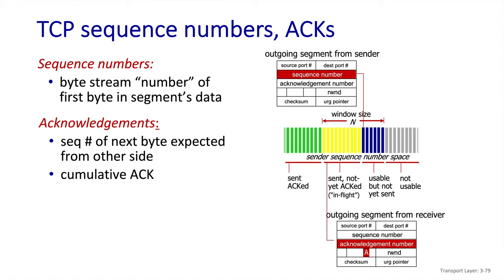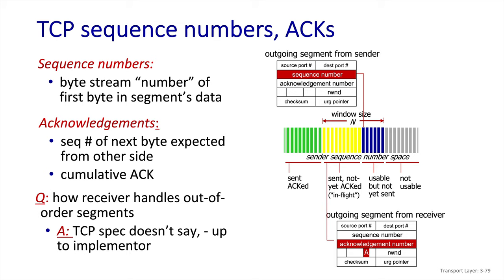This is a cumulative acknowledgement number, as we saw with go-back-N. When we talked about go-back-N, we said that the receiver may buffer out-of-order segments or it may discard them. TCP doesn't specify one option or the other — it's up to the operating system implementers to decide how to handle out-of-order segments.